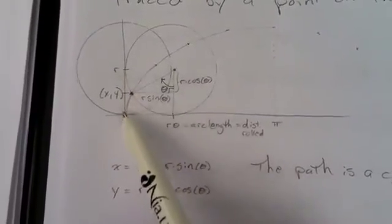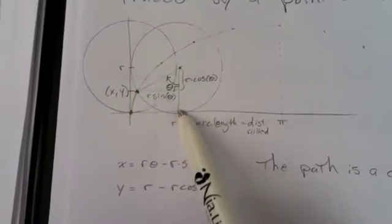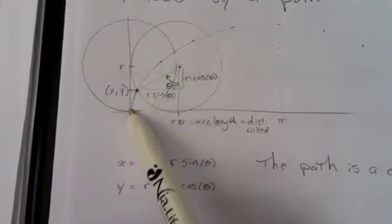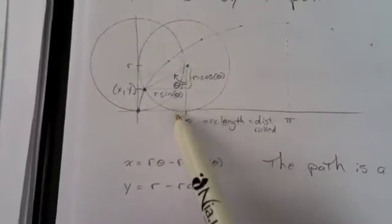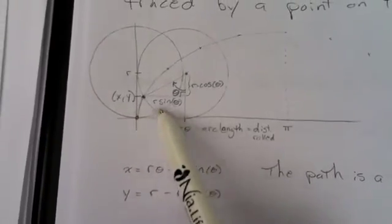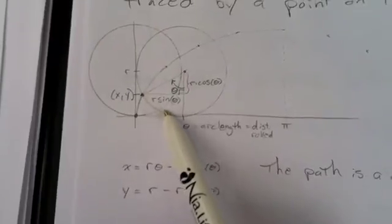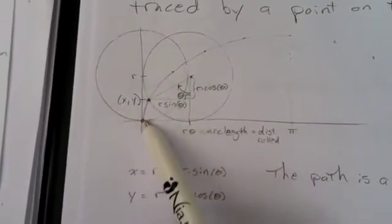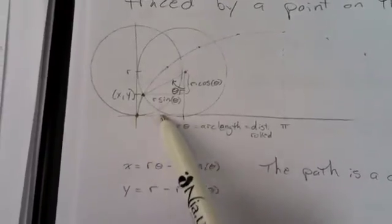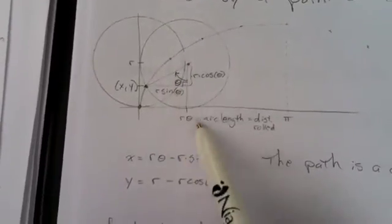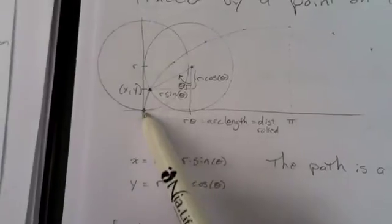The distance horizontally from here to here is just the amount of the circle that touched the ground from there to there, which is an arc length. So this arc right there is what had touched the ground from here to here. And to figure out arc length, you just take radius times your radian angle. r theta is the distance from there to there.